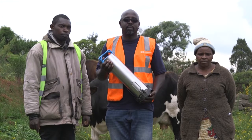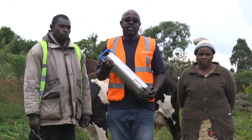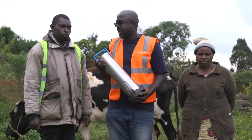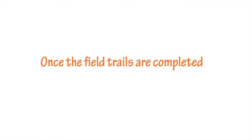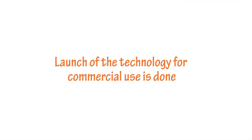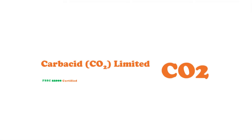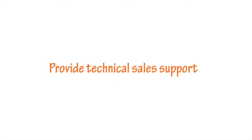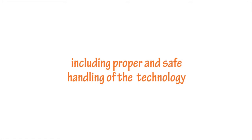Kaba Acid Limited in partnership with Global Good Initiative is pleased to provide and supply the AI flask and dry ice for the benefit of the AI technician and the farmer. Once the field trials are completed and the launch of the technology for commercial use is done, Kaba Acid Limited will, at an affordable price, supply the dry ice AI-filled flask, dry ice packs and pellets, and provide technical support including proper and safe handling of the technology. We are grateful to Global Good for having developed this technology and for choosing Kaba Acid to help supply dry ice to support the 9 million dairy cattle in the East Africa region.